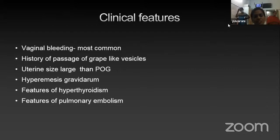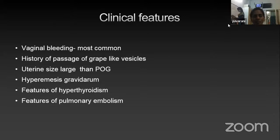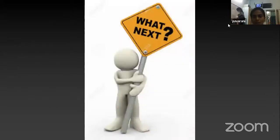Moving on to clinical features: the patient will present with vaginal bleeding, which is the most common symptom, seen in the first trimester. There is history of passage of grape-like vesicles and uterine size will be larger than the period of gestation. Patient has excessive vomiting due to beta HCG. There will be features of hyperthyroidism such as tremors and tachycardia, as beta HCG and the alpha subunit of TSH share the same structural configuration. There will also be features of pulmonary embolism when invasive mole ruptures into maternal circulation, leading to cough, hemoptysis, and breathlessness. Workup and management will be discussed by Dr. Ramya. Thank you.